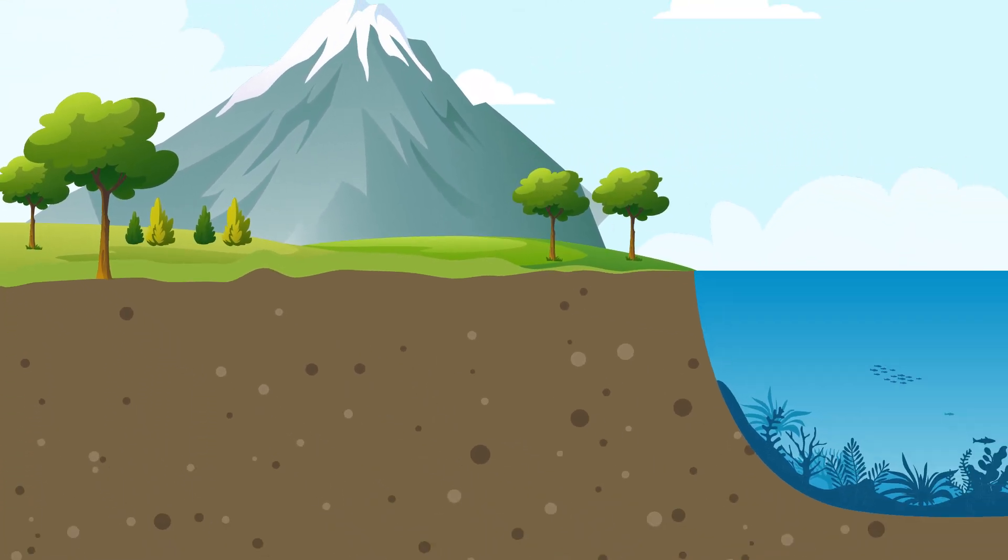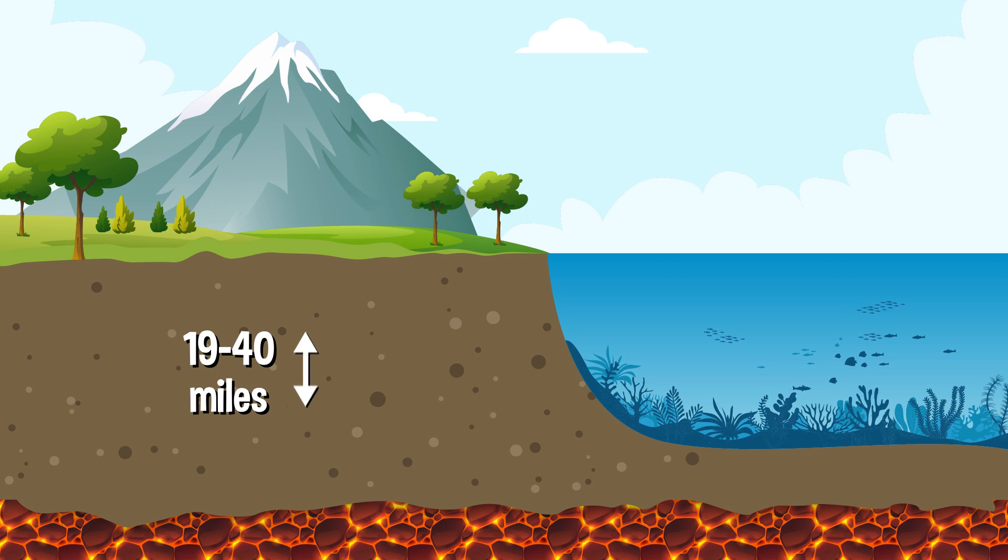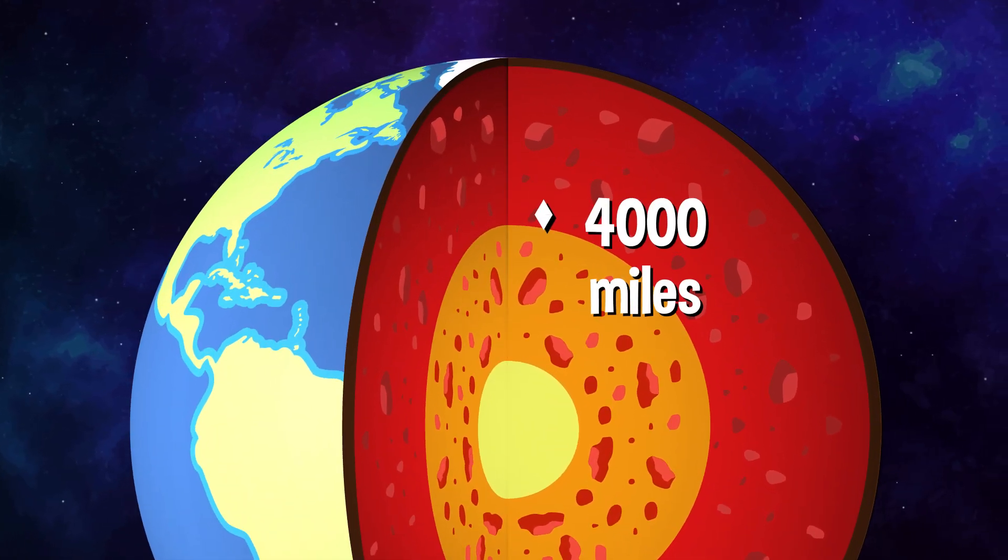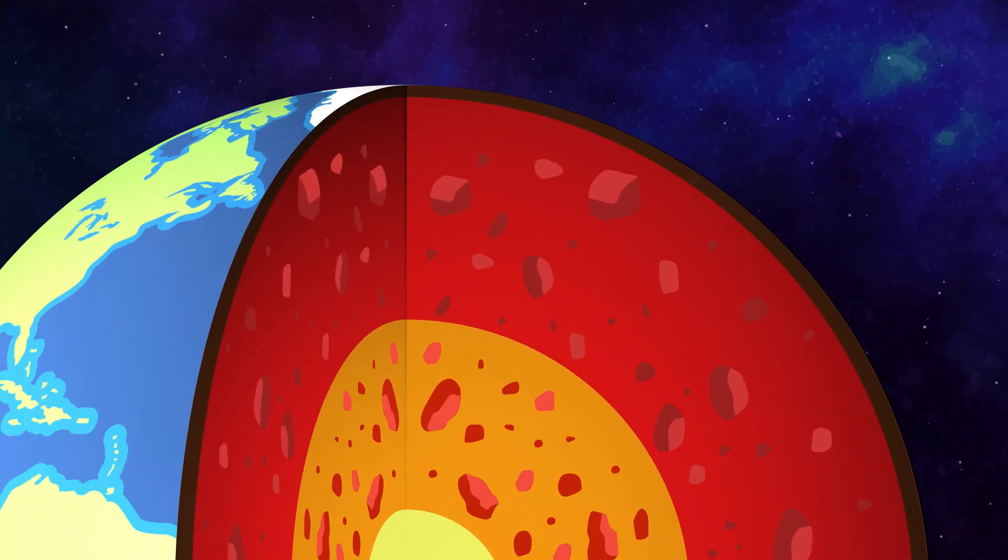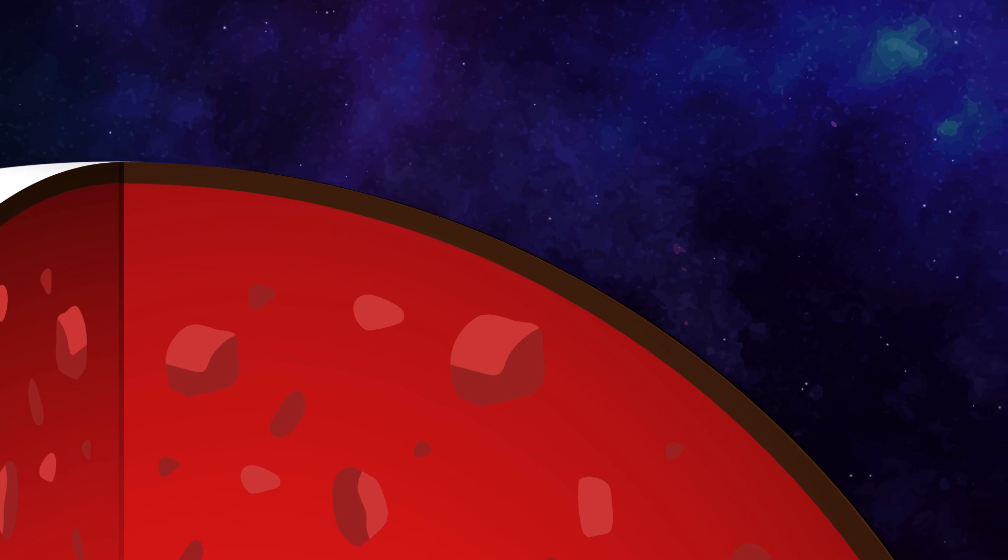Compared to the other layers of the Earth, the crust is actually quite thin. Under land, it ranges from 19 to over 40 miles thick. But beneath the oceans, the crust can be just three miles thick. Considering that the center of the Earth is 4,000 miles down, just a few miles of crust isn't much.